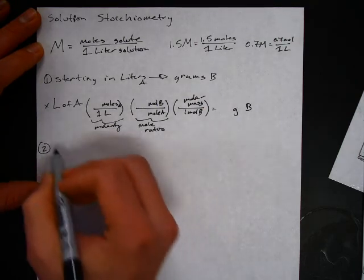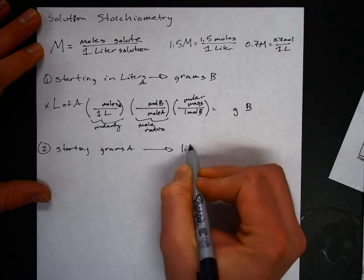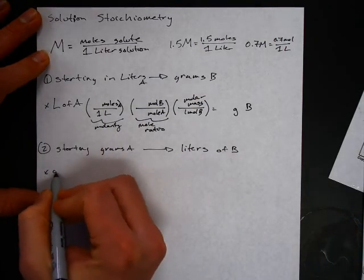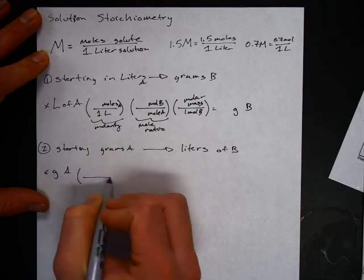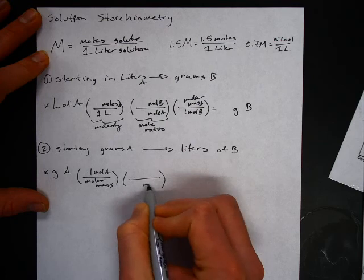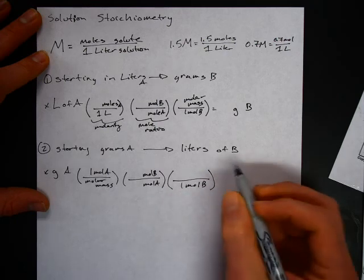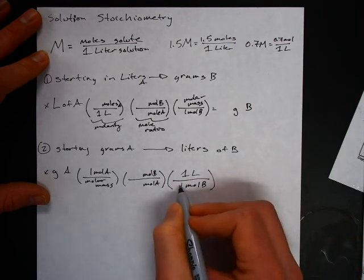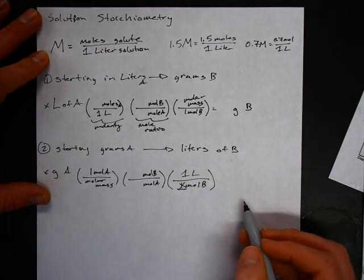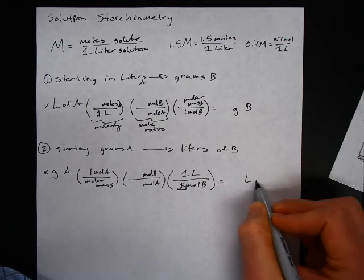The second problem type is starting in grams of A and going to liters of B. This is basically the same problem, just backwards. I'm starting with a certain number of grams of A, and by the molar mass ratio I convert to moles. Then I go into my mole ratio — moles of A to moles of B — and those coefficients are from the balanced equation. For every liter I'll have a certain number of moles of B, and that's from molarity. In the 1.5 molar example, it would be 1.5 moles of B, whatever's in front of the molarity symbol. And that gives me liters of B.